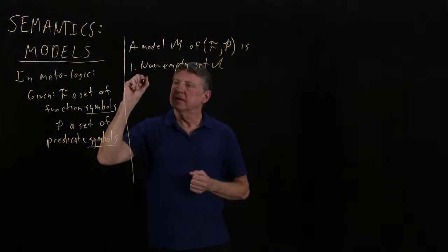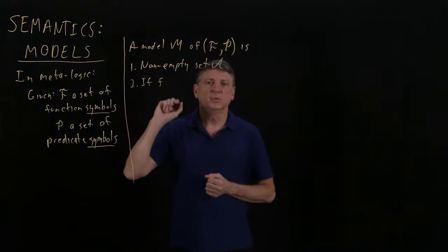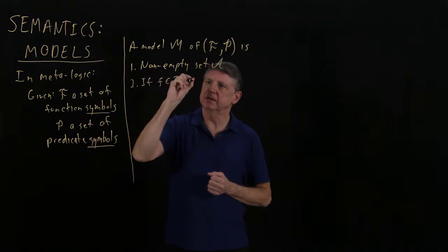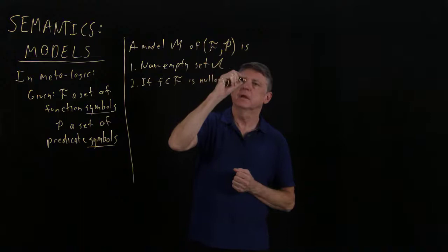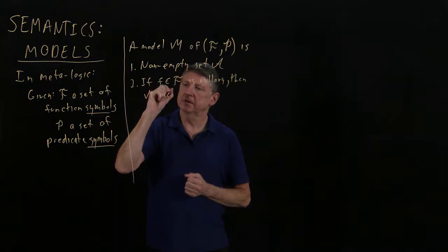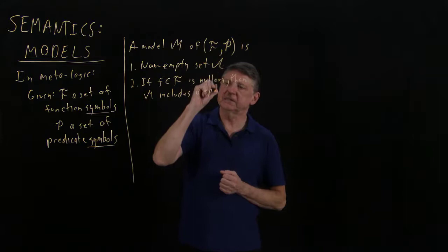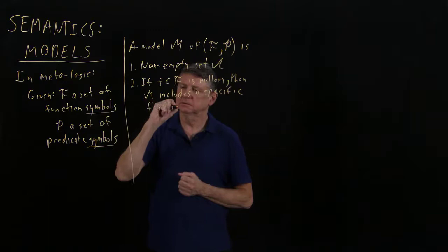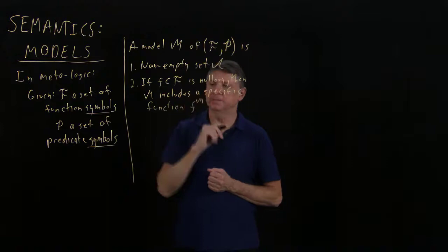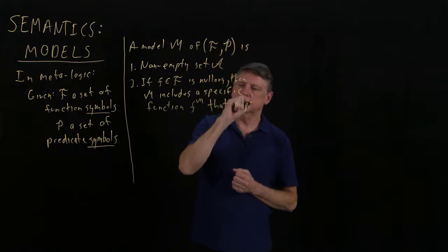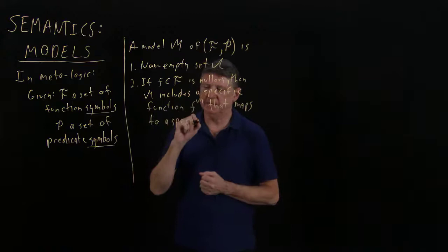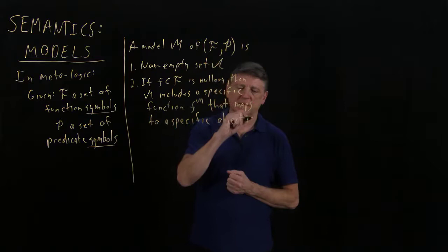Then if a function symbol, which we'll represent as F, if this is nullary, then M includes a specific function. And we'll write that function as F with a superscript M. And we'll say that maps to a specific object in M, a specific object in the universe of discourse.